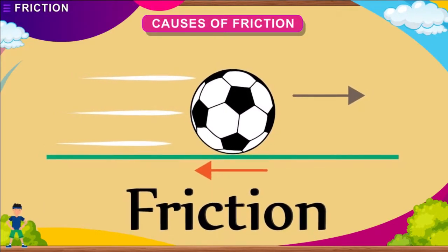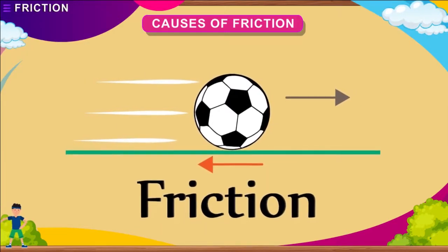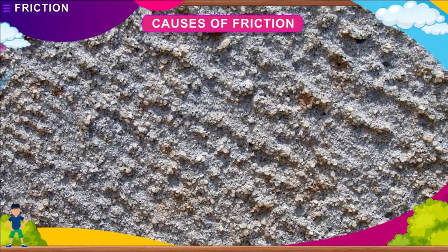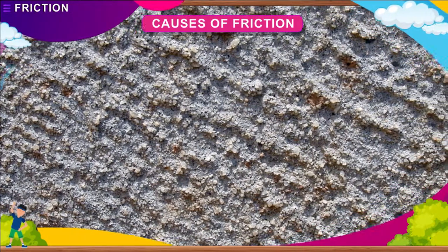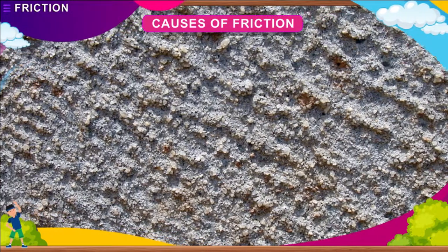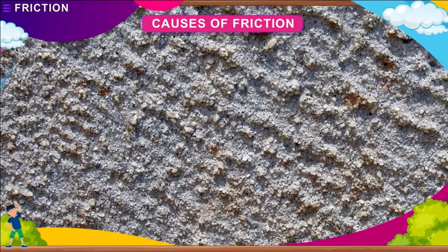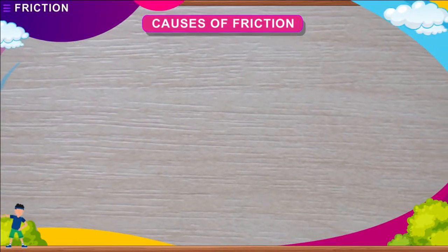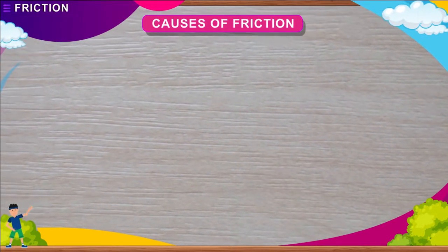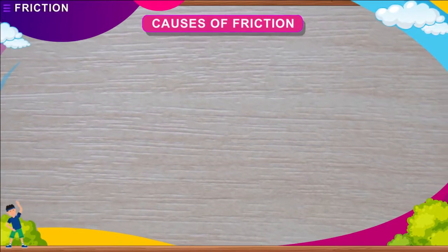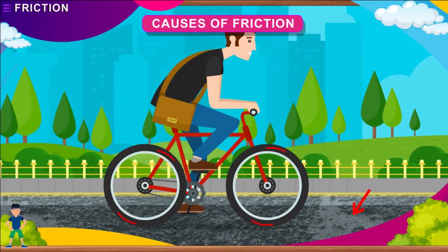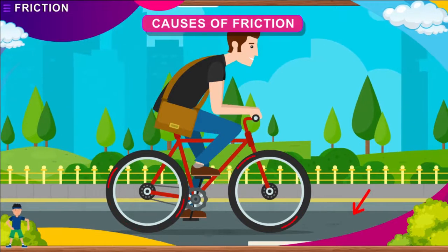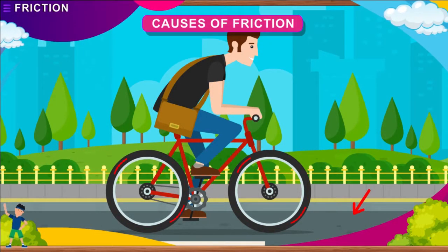CAUSES OF FRICTION. Friction comes into play because of the following factors. A surface which is rough, has many grooves and is irregular, is said to have greater friction — movement of objects on such a surface is difficult. If the surface is smooth, the friction experienced is less. For example, if you ride a bicycle on a rough road, it covers a short distance after you stop pedalling, but if the bicycle moves on a smooth tar road, it covers a longer distance before it stops.